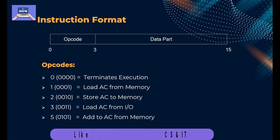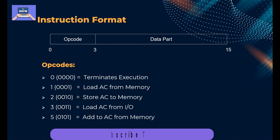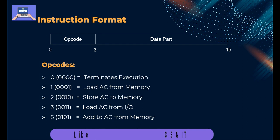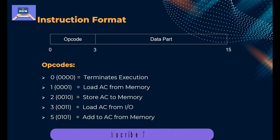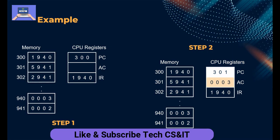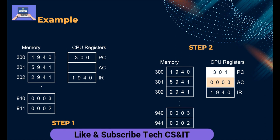Different opcodes are used for different purposes. Opcode 0 is used for termination of execution. Opcode 1 is used to load data from memory into the accumulator register. Opcode 2 is used to move data from the accumulator register to memory. Opcode 3 is used to bring data into the accumulator through an input device. Opcode 5 is used to write from the accumulator into memory. There are more opcodes, but in our upcoming example, these are the ones being used.